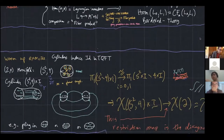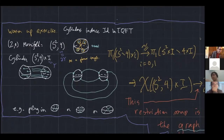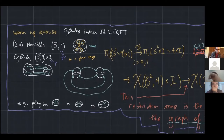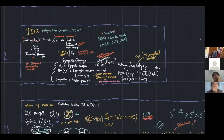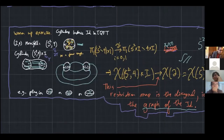So that's enough abstract nonsense — let's get to the topic. Here's a warm-up exercise that should be familiar to anyone. The exercise is just this fact that cylinders, if you take a surface and cross it with an interval, this should induce the identity on any sort of topological quantum field theory. Let's see how this plays out in this meta-diagram, as far as this character variety functor goes.